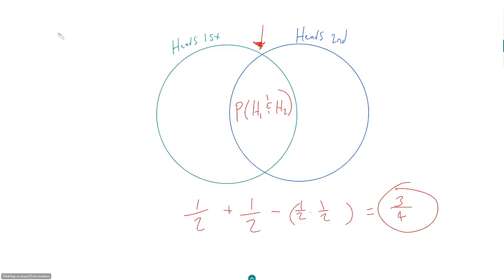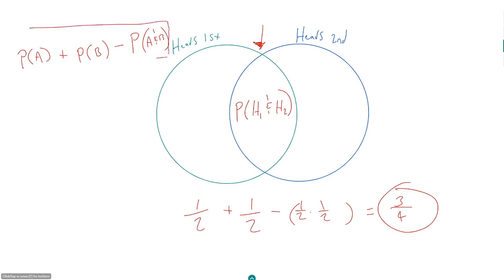The formula to remember for 'or' scenarios is: P(A) + P(B) − P(A and B). Now, I don't love this formula — it's not super intuitive. It's a somewhat weird approach where you purposely double-count something and then subtract out what you double-counted. Also, it doesn't represent every scenario. We use this formula here because heads on the first flip and heads on the second flip are not mutually exclusive — both can occur.